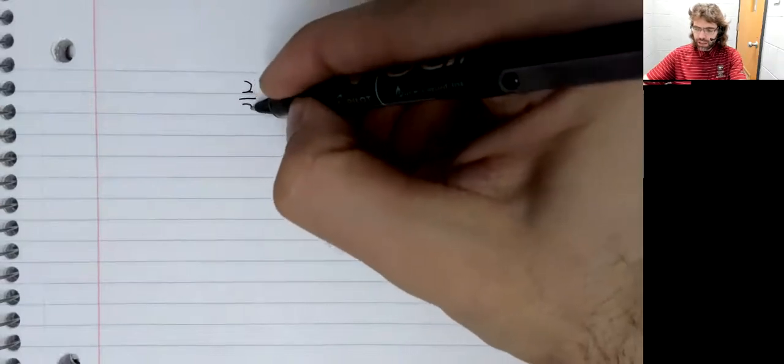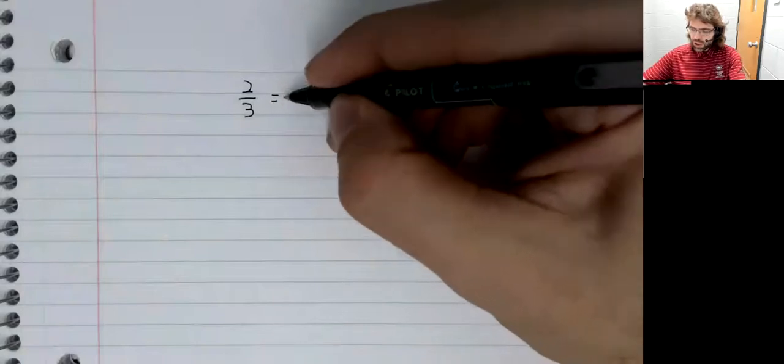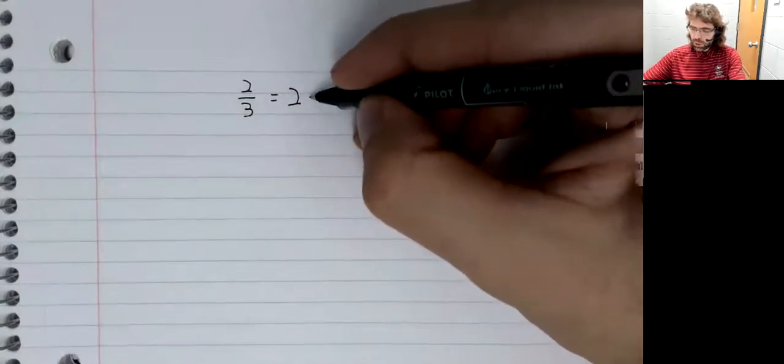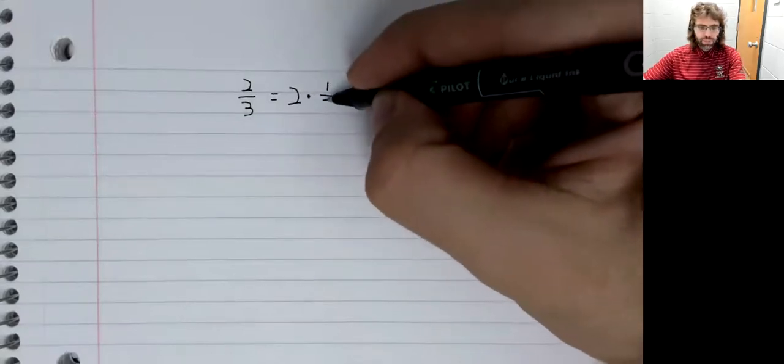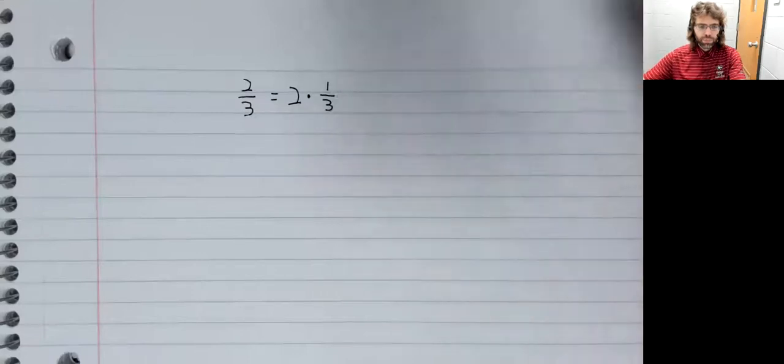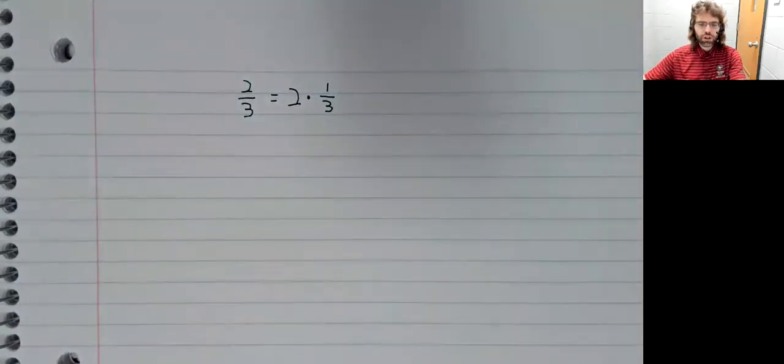The key observation behind this waffling is that you can think of division as multiplication. So if you have two divided by three, you could think of that as the number two multiplied by the number one third.